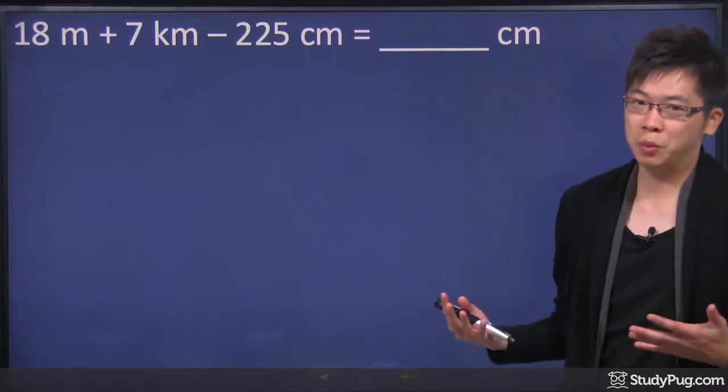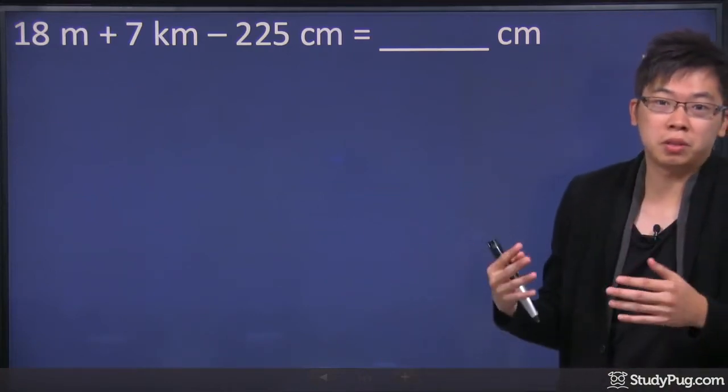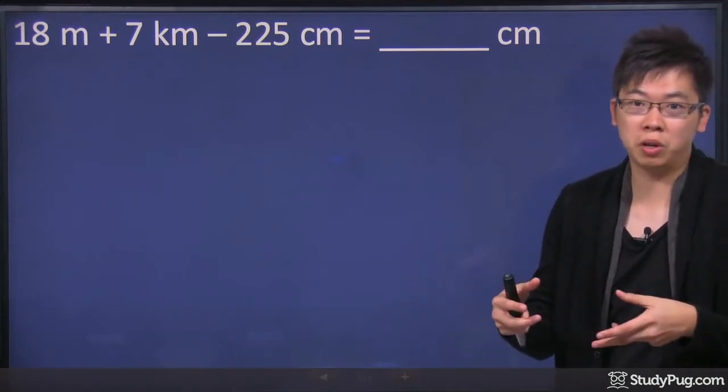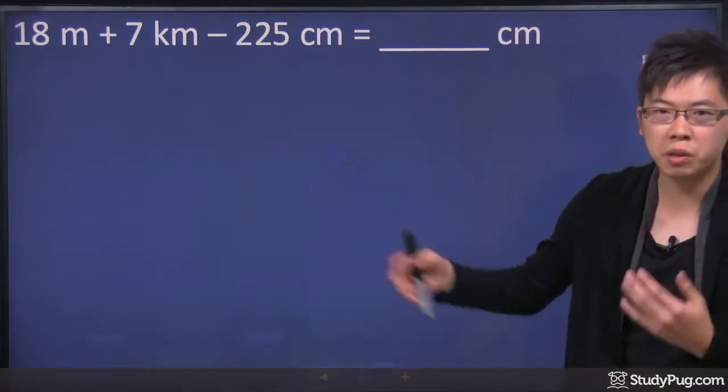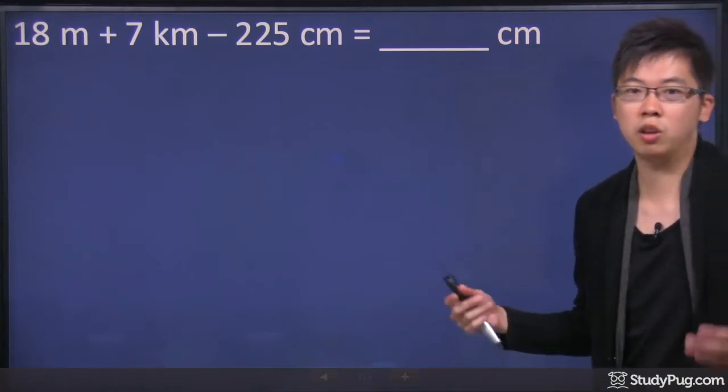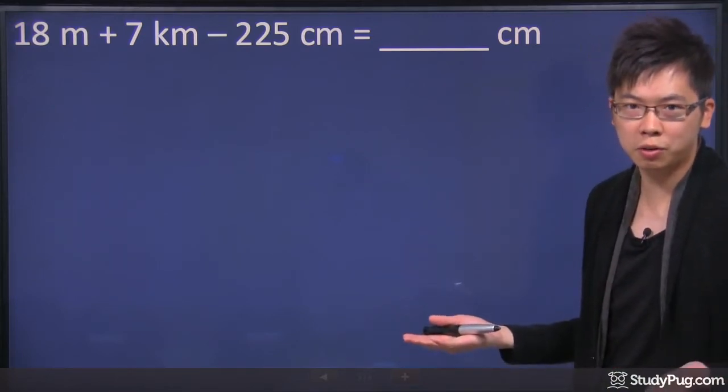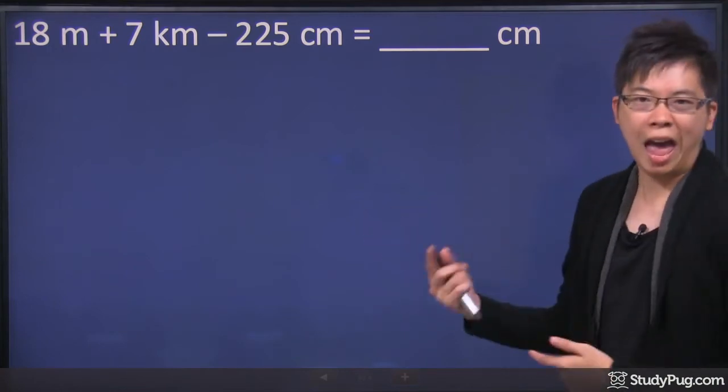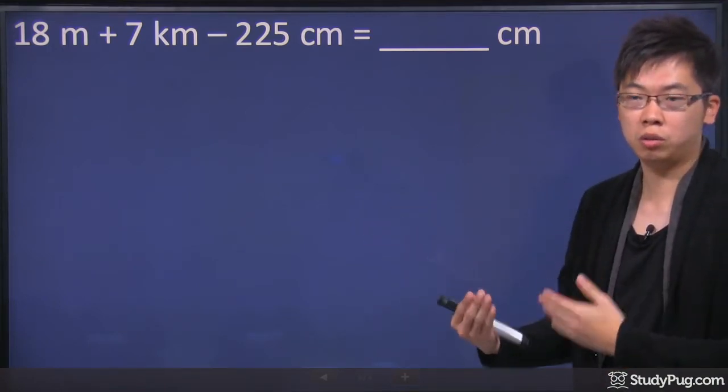Okay, so this is a typical question where there are multiple different units put into one question. We've got 18 meters plus 7 kilometers and another 225 centimeters, and you're trying to put everything into centimeters. So before you can actually add or subtract, make sure they're all in the same units.